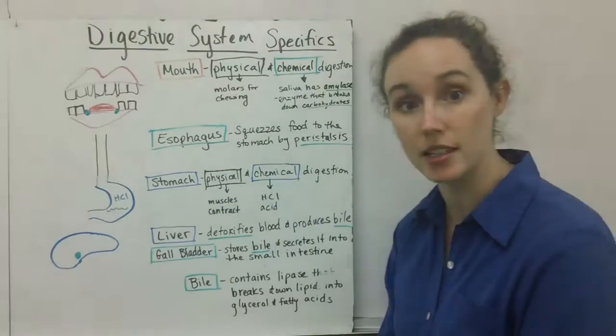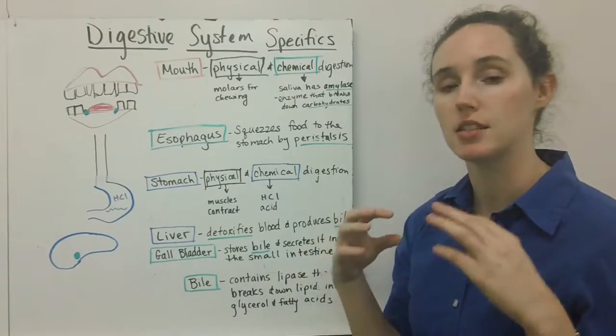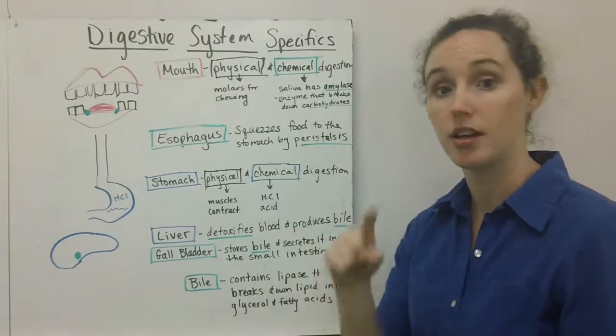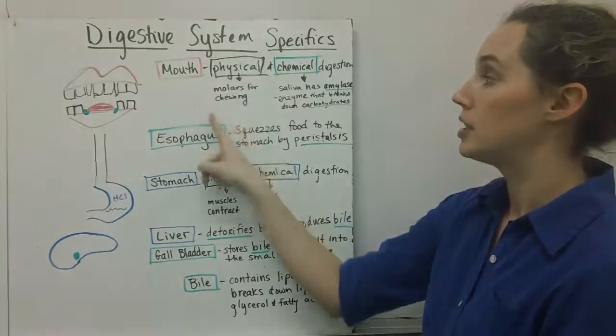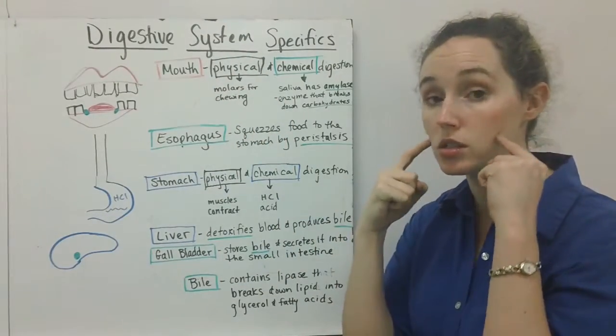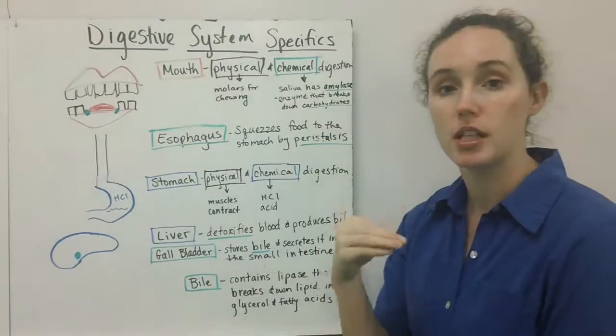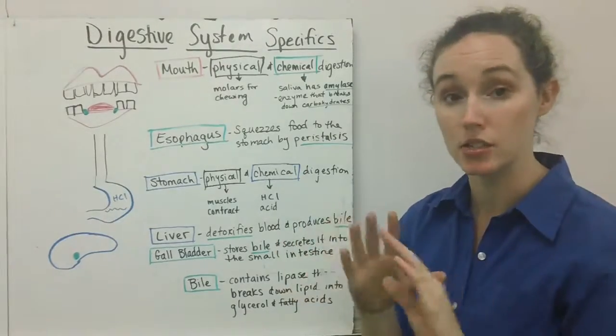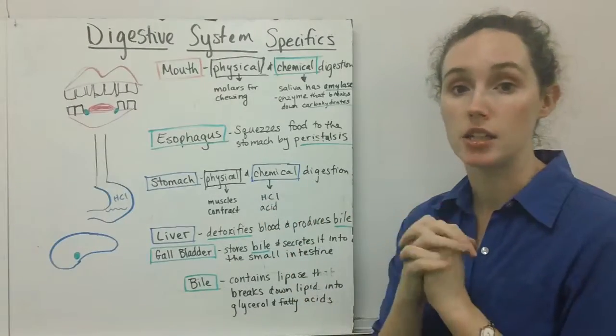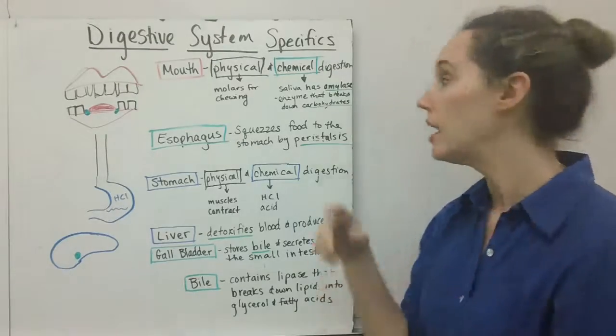Here's some details about the digestive system. First of all, your mouth is a site for two kinds of digestion: physical, which is your chewing motion that's going to happen from your molars, the teeth in the back of your mouth, and chemical digestion using your saliva.